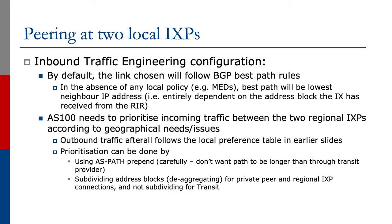For inbound traffic engineering at two regional IXPs, by default it will follow BGP best path rules. AS100 will need to prioritize incoming traffic between the two regional IXPs according to geographical needs or other issues. Outbound traffic will follow the local preference table discussed earlier. Prioritization can also be done using AS path prepend, though this needs to be used carefully. Another option is subdividing address blocks — de-aggregating for peering and regional connections, but not subdividing for transit.